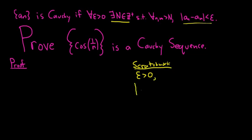So let's go ahead and write down that inequality. So a sub n will be just the cosine of 1 over n minus a sub m, which is the cosine of 1 over m. And now we're kind of stuck.